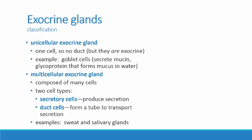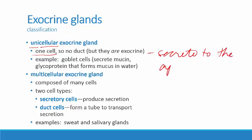We can classify exocrine glands as unicellular or multicellular. A unicellular exocrine gland is a single cell — there isn't a duct, since ducts are part of multicellular glands — but they are exocrine because they secrete to the apical surface. Goblet cells, which we saw in the pseudostratified columnar epithelium, are an example of a single-celled exocrine gland. They produce the glycoprotein that forms mucus when mixed with water.